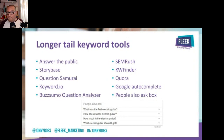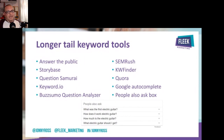Here are some great tools for finding longer-tail keywords and questions: Answer the Public, StoryBase, Question Samurai, Keyword.io, BuzzSumo Question Analyzer, SEMrush, KW Finder, Curo, Google Autocomplete, and the People Also Ask box.